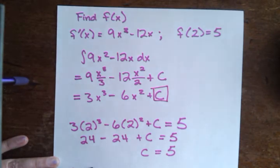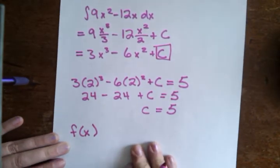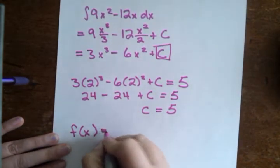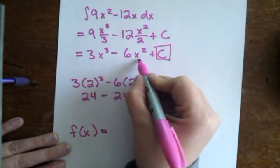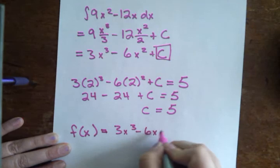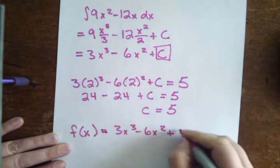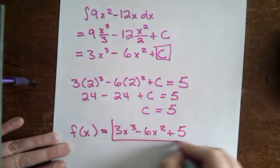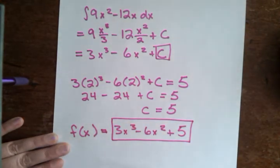So f of x, make sure you can see what we have here, f of x equals, well, we found the whole first part of it up here, 3x cubed minus 6x squared plus c, but now we know that c equals 5, and that gives us the answer that they're looking for.